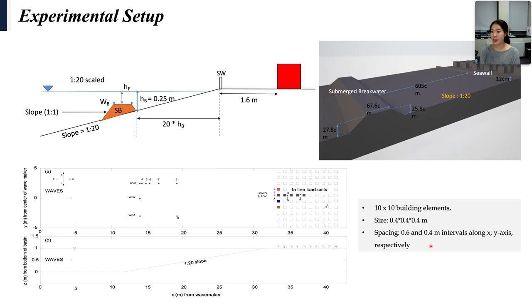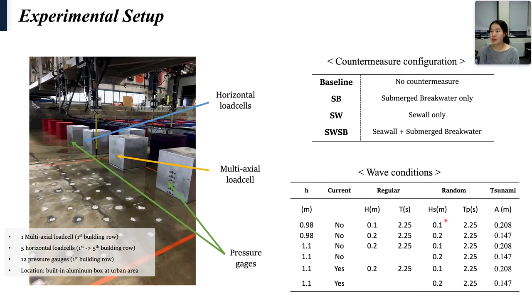To tell you more about the equipment, one 6-degree-of-freedom load cell and five horizontal load cells were installed on the box-type structure. And on two structures on both sides, we installed six pressure sensors at each building. Also, there are four different configurations including baseline, submerged breakwater only, seawall only, and seawall and submerged breakwater.